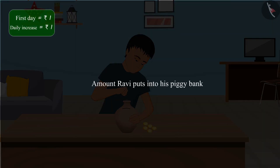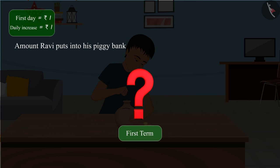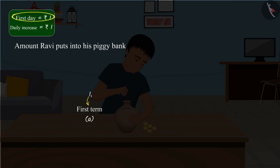For this, we have to make a list of the amount Ravi puts in his piggy bank every day. What will be the first term of the list? Absolutely right! The first term A will be 1, because he puts 1 rupee in the piggy bank on the first day.